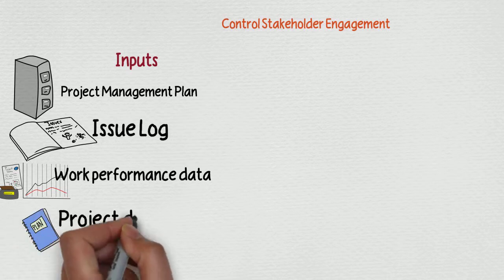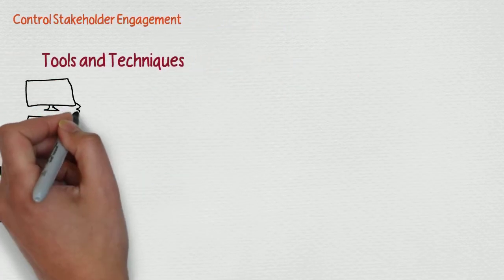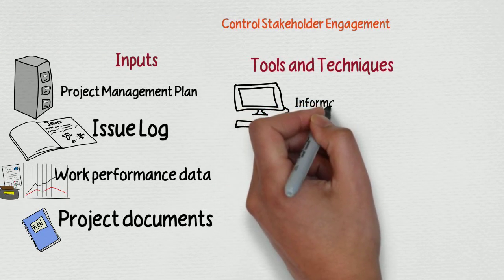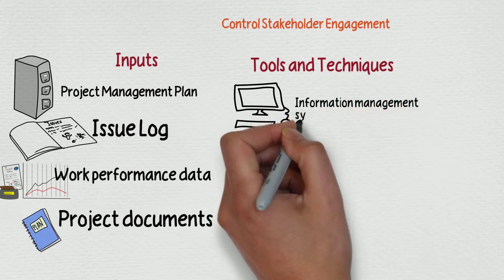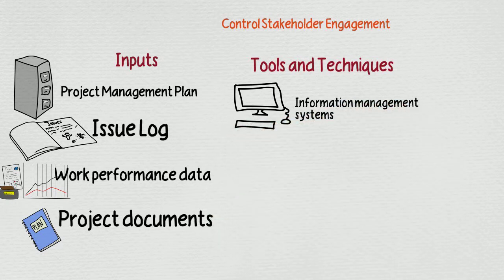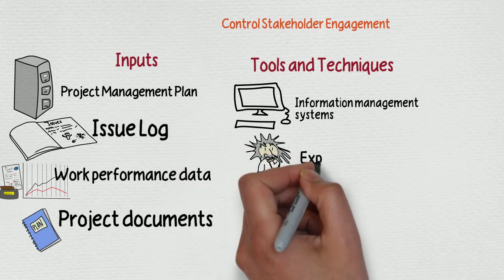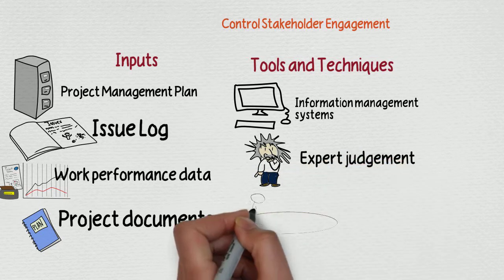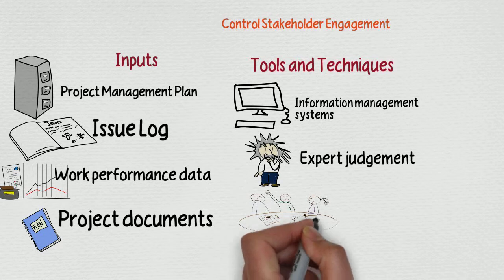Your tools and techniques for Control Stakeholder Engagement are information management systems — really any way that you control, connect, or want to use the information and the systems providing that information. And, of course, expert judgment. It is a lot of information that needs to be parsed out, and you know a lot of it, and other people know much about it as well, including the best way to control the engagement of your stakeholders.